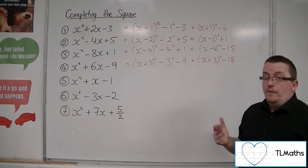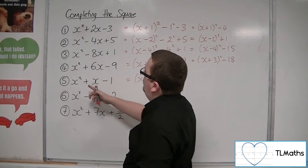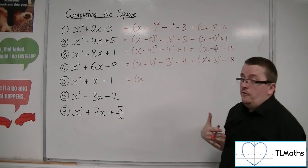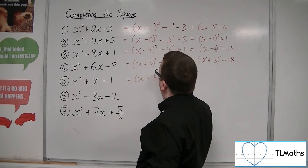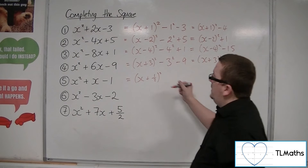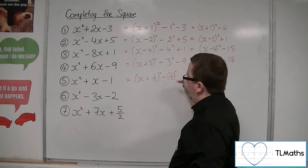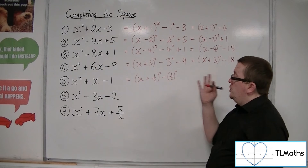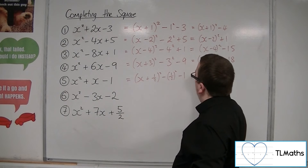For number 5, we've got x with a plus 1x term. So we're going to have to half the 1, giving us plus a half, squared. We still need to take away a half squared — I'll use brackets here because we've got to remember that we're squaring both the numerator and the denominator. And we've got minus 1.